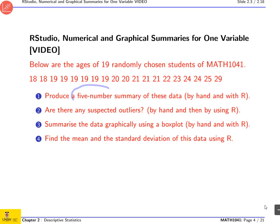We will produce a five-number summary by hand and using R, and I will remind you how we do this exactly. Then we'll try to find outliers, again by hand and using R, and we'll produce a boxplot by hand and using R.